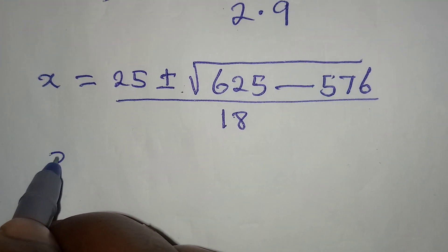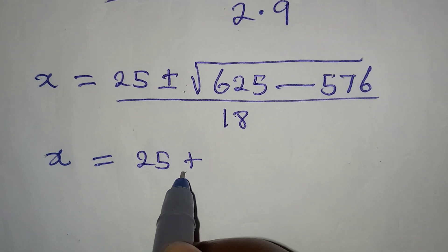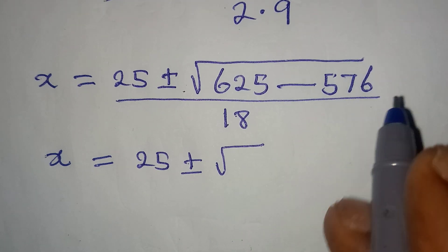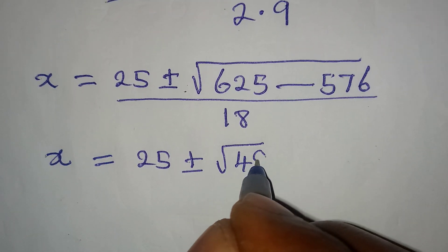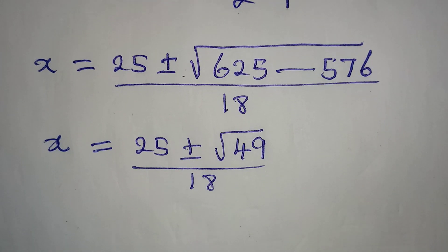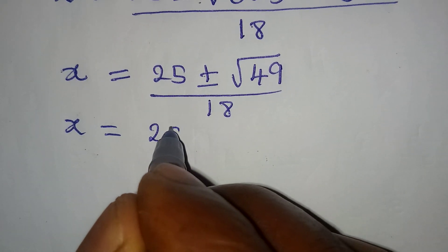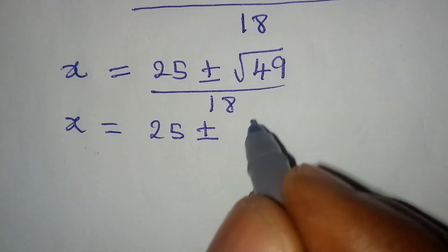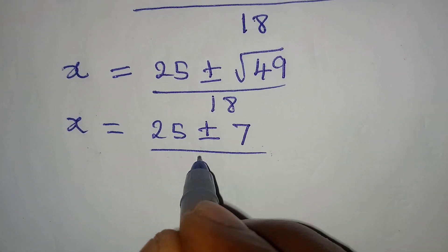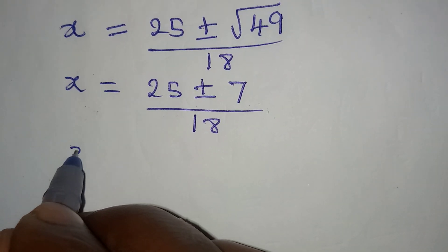From here, x will be equal to 25 plus or minus square root of 625 minus 576, which is 49, and this is over 18. Since 49 is a perfect square, x equals 25 plus or minus square root of 49, which is 7, over 18.